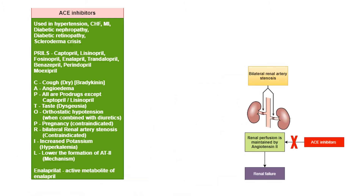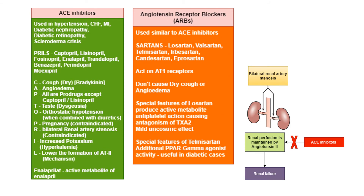In bilateral renal artery stenosis, renal perfusion is maintained only by angiotensin II. When ACE inhibitors block angiotensin II formation, renal perfusion is reduced, leading to renal failure. Both ARBs and ACE inhibitors are therefore contraindicated in bilateral renal artery stenosis.